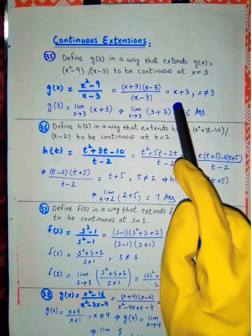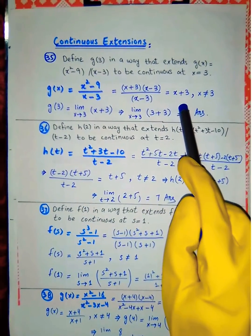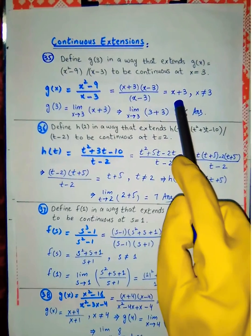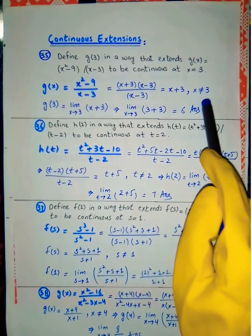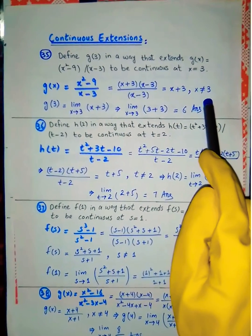After cancellation, g(x) is equal to x plus 3, where x is not equal to 3.